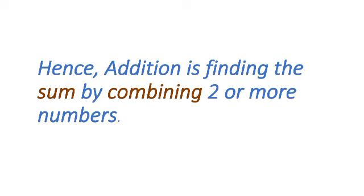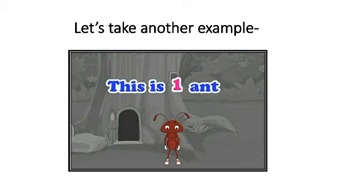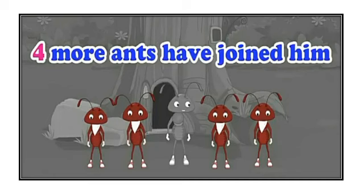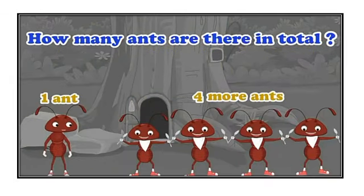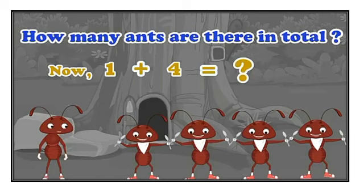Now let's move on to more examples. This is one ant. Let's add four more ants — that means four more ants have joined him. Now, how many ants are there in total? There is first one ant and four more ants joined him. So one plus four equals? Let's count: one, two, three, four and five. So one plus four is equal to five. Very good children.